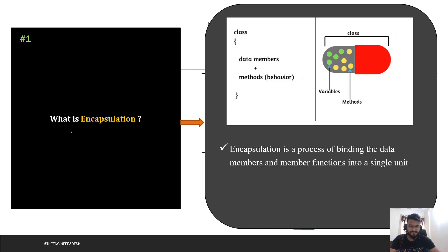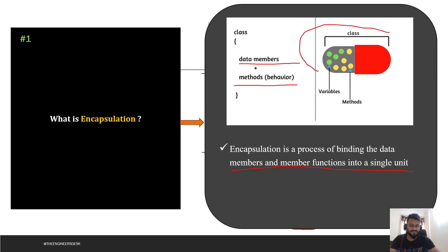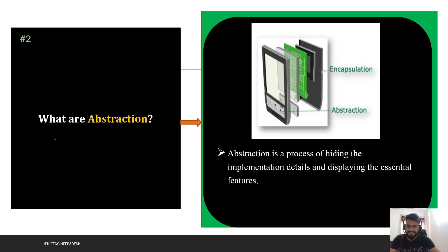The first question is: what is encapsulation? Encapsulation is a process of binding the data and member functions into a single unit. Whenever you think of a class, a class comprises of two things: data members as well as methods. Binding both these things together is called encapsulation — it's kind of a capsule view where both things stay together.